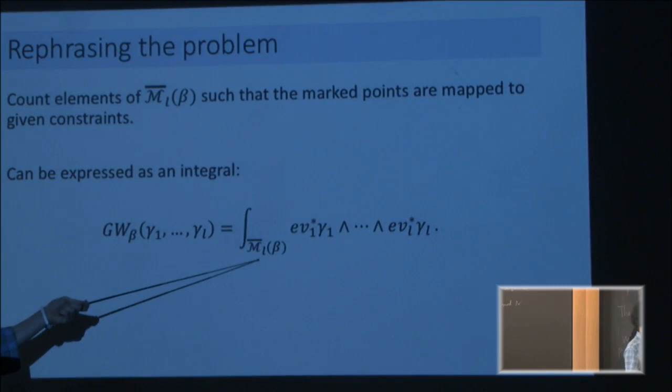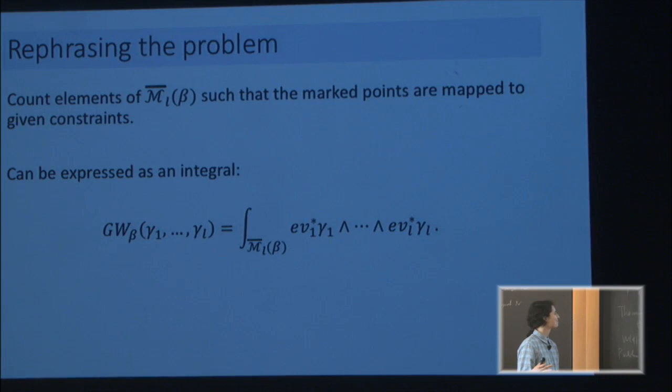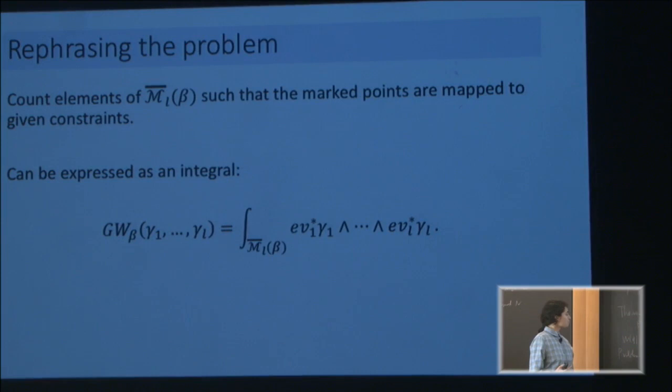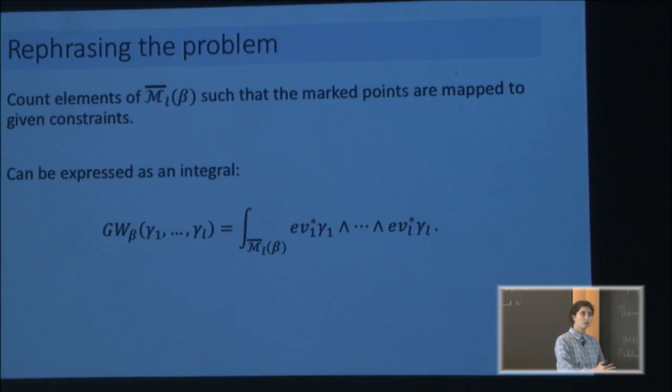You might object: how can I integrate over some crazy, mysterious moduli space? The answer is I don't necessarily know how to do that. But if I can — and in many examples we can — it has a very nice structure: it has differential forms, everything a geometer might wish. In that case, this expression really gives me a number that is invariant, in the sense that if we move around the constraints within their homology class, we get the same answer.